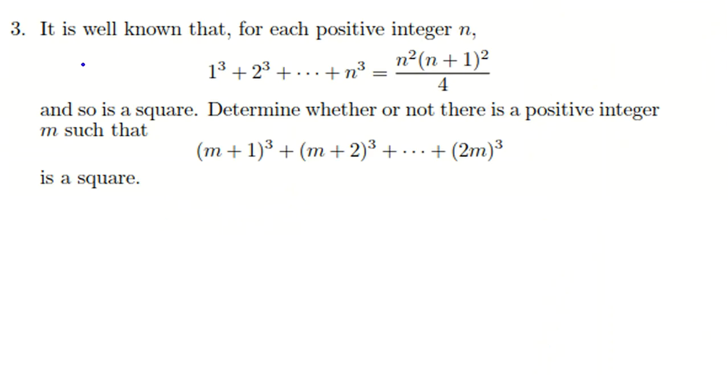The problem is the following. BMO round 2 problem: it is well known that for each positive integer n, this identity is so much famous and important. There are around 5 important identities you should memorize. One of them is this, and in this problem it says that exactly the formula is what, and so is the square.